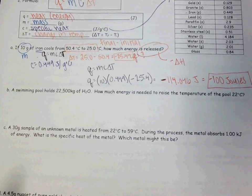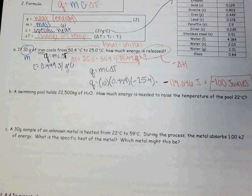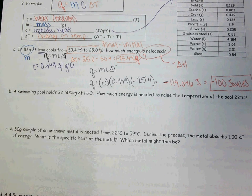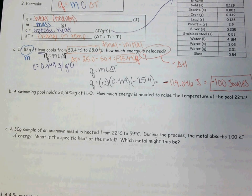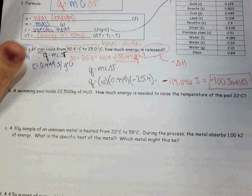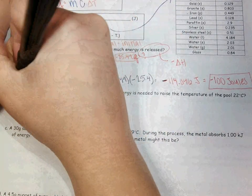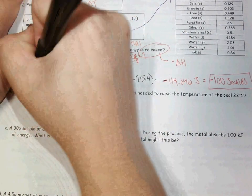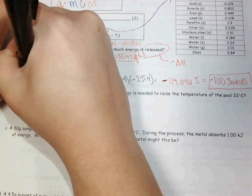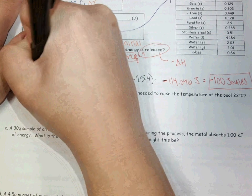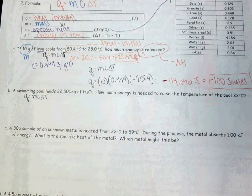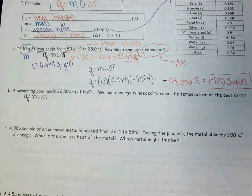So for letter B, it says a swimming pool holds 22,500 kilograms of water. How much energy is needed to raise the temperature of the pool by 22 degrees Celsius? The first thing we're going to do is identify the equation we're using. We only have one equation, which is Q equals MC delta T. I want to see this equation actually on your paper.